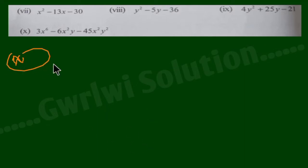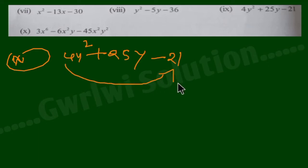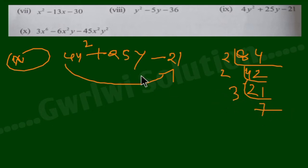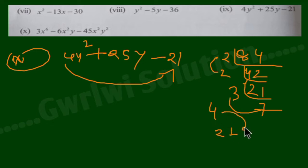The next question is the number 4y squared plus 25y minus 21. First of all, the product number is 84. The number rises to 1, and we get numbers 6 and 1, then number 7, minus 7. So it's number 6 and number 7, and that 21 gives us 25.